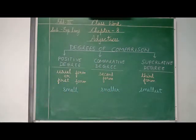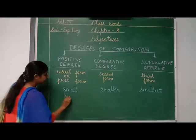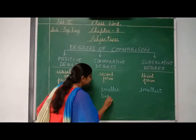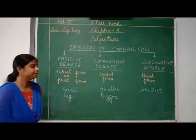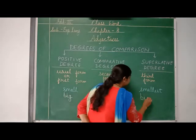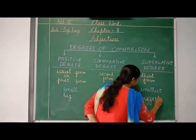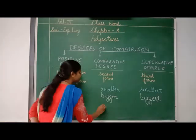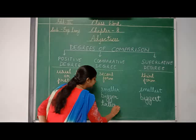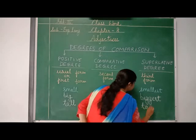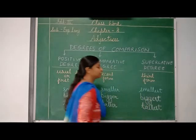Now let's take more examples. Big — what is the comparative degree of big? Bigger. We are adding -er. And the superlative degree of big is biggest. Similarly, tall — we are adding -er at the end, putting it in comparative degree. So it's taller. And at the end, we are adding -est — tallest.